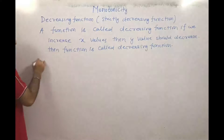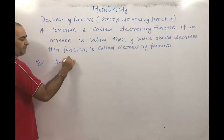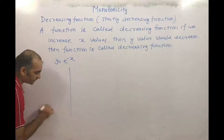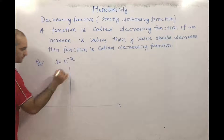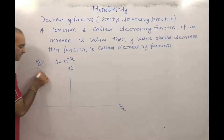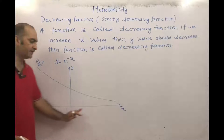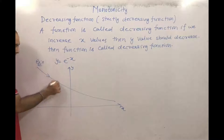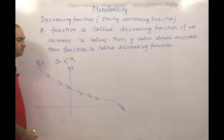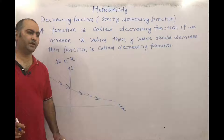For example, y = e^(-x). The graph of this function — this is the y-axis, this is the x-axis — you can see that if you increase the x value, the y value is decreasing, it is coming down. So this function is called a decreasing function, or strictly decreasing function.